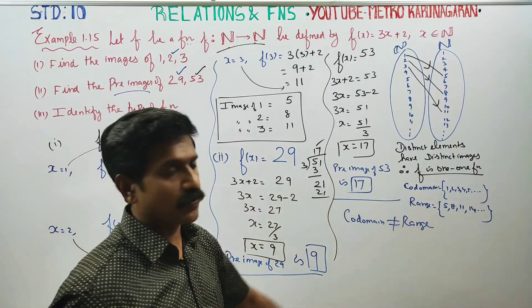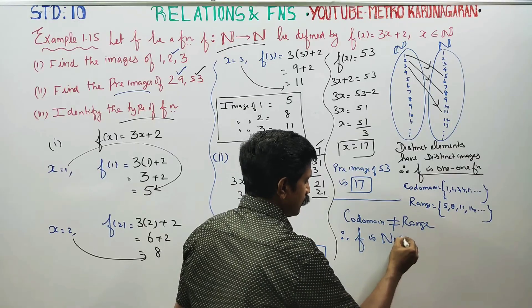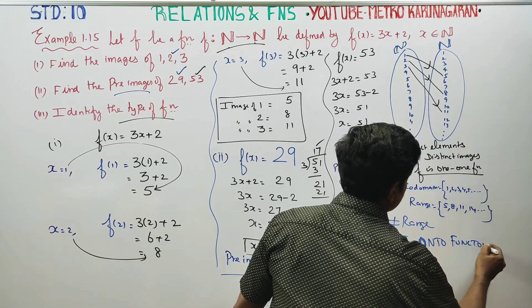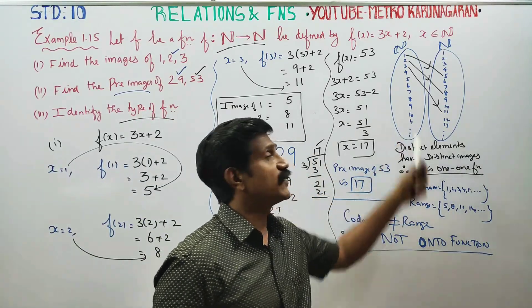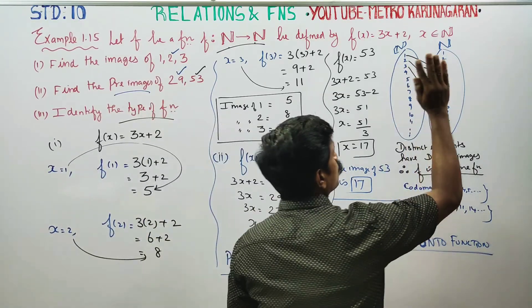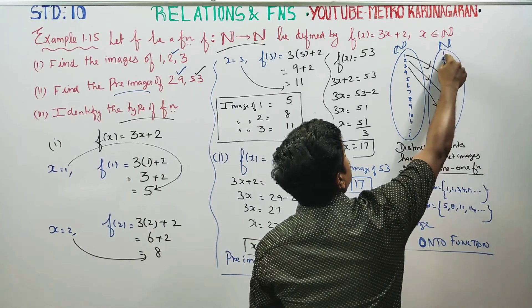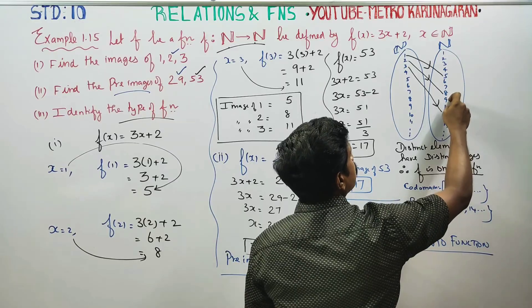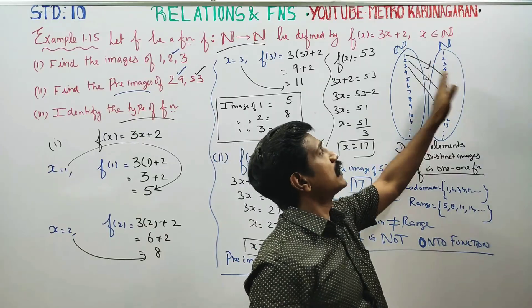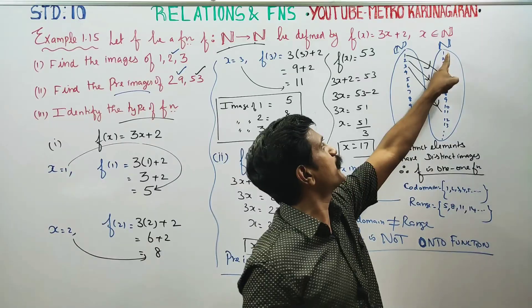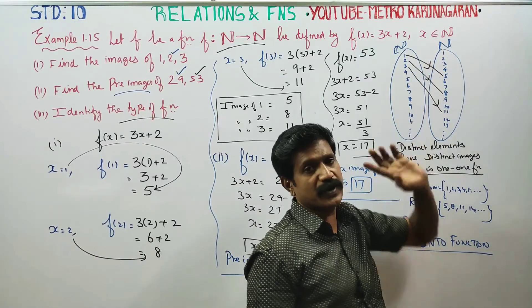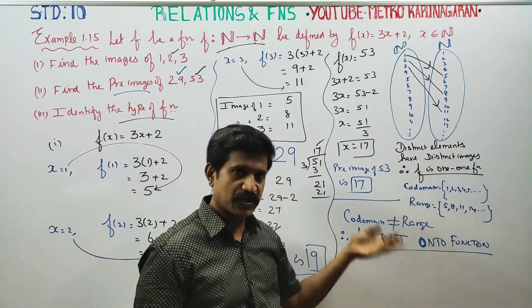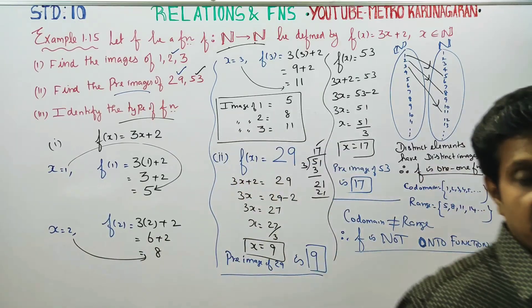Therefore, f is not an onto function. This function is not onto because the co-domain and range are not equal. Elements like 1, 2, 3, 4, 6, 7, 9, 10, 12 do not have pre-images. Since the co-domain is not equal to the range, f is not an onto function.